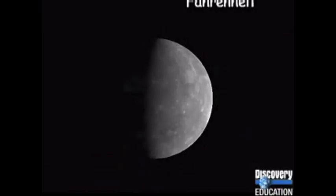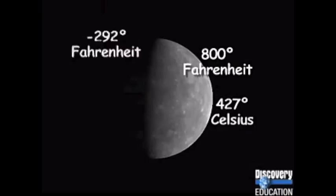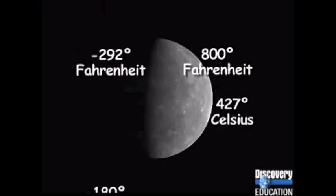Mercury is the closest planet to the Sun. It is the second smallest planet and is only slightly larger than Earth's moon. Temperatures on Mercury are severe. The side facing the Sun can reach 800 degrees Fahrenheit, or 427 degrees Celsius, and the side in darkness can reach minus 292 degrees Fahrenheit, or minus 180 degrees Celsius. One reason for such a wide range of temperatures is that the planet has a very thin atmosphere that cannot hold in the heat from the Sun. Because its atmosphere is too thin to burn up approaching meteorites, the surface of Mercury is scarred by the impact of countless collisions.